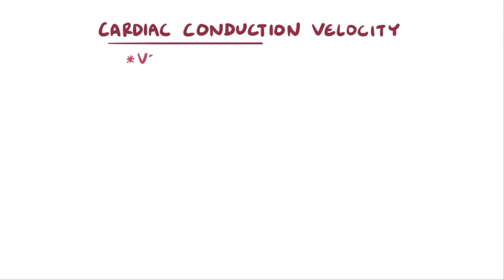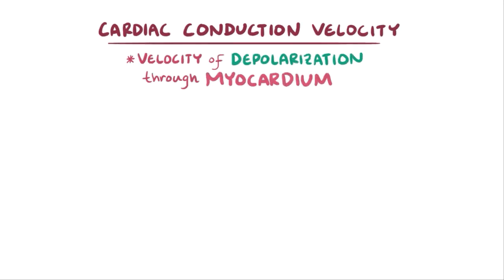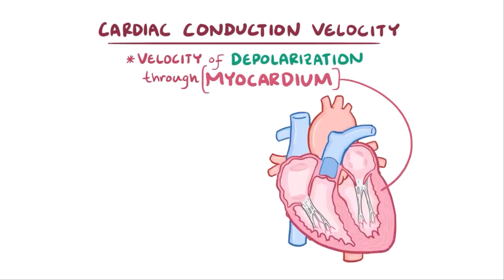Cardiac conduction velocity is the velocity at which a depolarization wave moves through the myocardium, which is the muscular middle layer of the heart, and it's measured in meters per second.